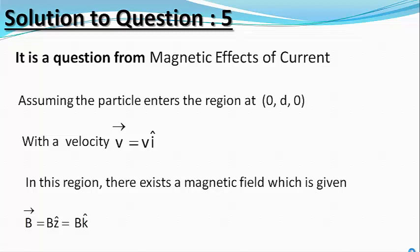Hence, throughout the motion of the particle, its speed will always be equal to v only. Moreover, the particle will always be moving in the xy plane. So, the velocity vector is always perpendicular to the magnetic field vector.